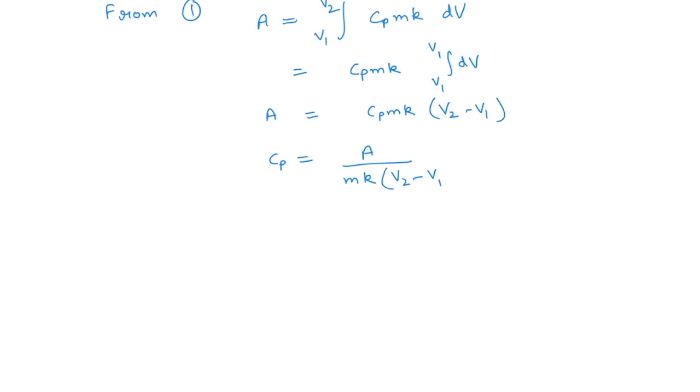We can write V2 minus V1 equal to delta V, which is potential window. Potential window is the range in which we are working, that is between V1 and V2.